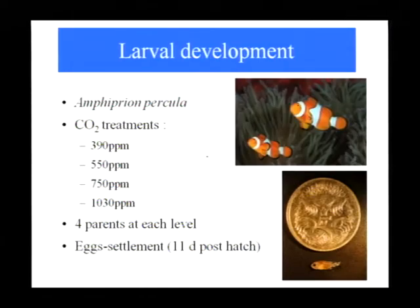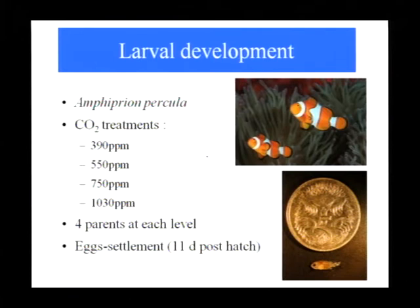We've been looking at larval development in particular in this fish, Amphiprion percula — good old Nemo. It's a really good model species for coral reefs: it lays benthic eggs, they hatch after a few days, and these little larvae are out in the plankton for about 11 days, then come back to find a reef and settle down to adult habitat. We're able to rear them very successfully in the lab and do some really quite sophisticated experiments.